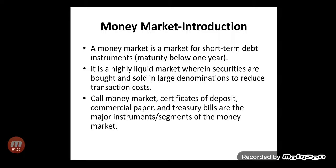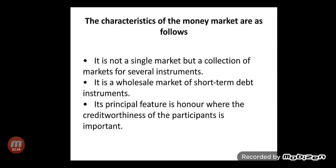The major instruments or segments of the money market are: the call money market, the certificate of deposits market, the market for commercial paper, and the market for treasury bills. The call money market transacts call money, the certificate of deposits segment handles CD transactions, and commercial paper and treasury bills are transacted in their respective sub-markets.